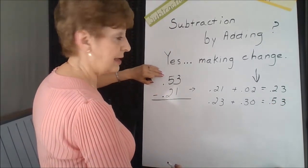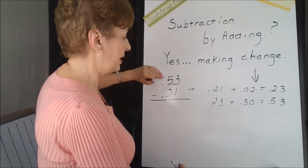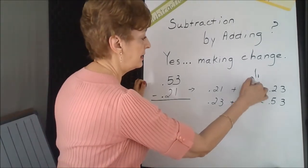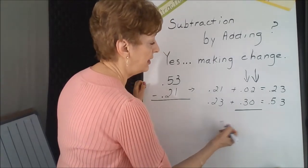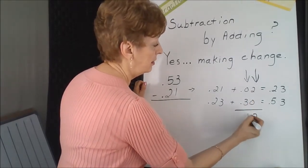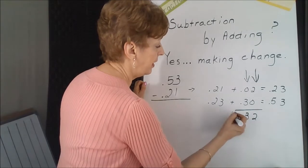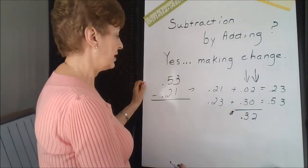That's where we need to stop because we've matched our top number, and this column is what we need to add together in order to find out how much money we have left in our pockets. 32 cents.